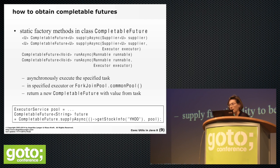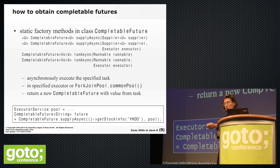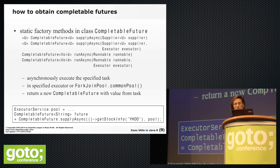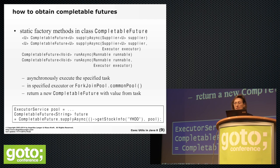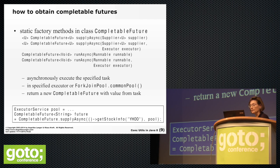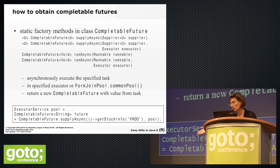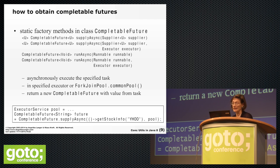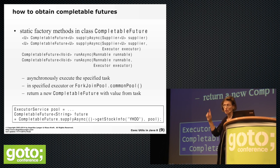CompletableFutures are created by passing tasks — Runnables or Callables — to a pool, but not by calling submit or execute directly. Instead, CompletableFuture has static factory methods to which you supply your task. One flavor is for Runnables — the methods are called runAsync and runAsync with an Executor, so you can specify which pool the Runnable will execute in. If you don't specify a pool, the fork-join common pool is used.